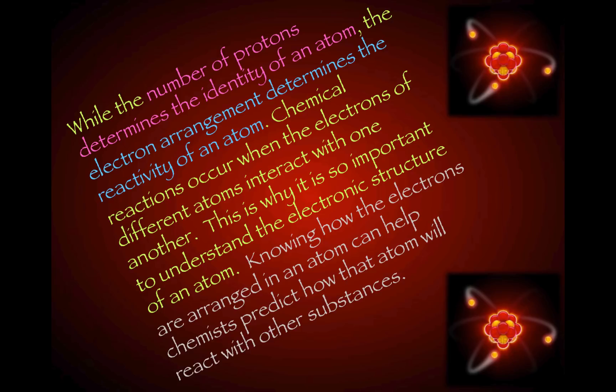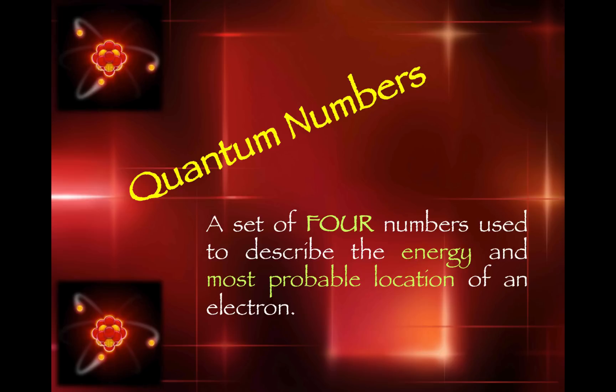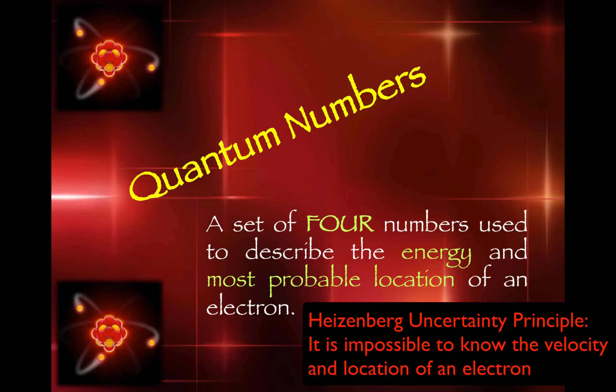Knowing how the electrons are arranged in an atom can help chemists predict how that atom will react with other substances. Quantum numbers are a set of four numbers used to describe the energy and most probable location of an electron.